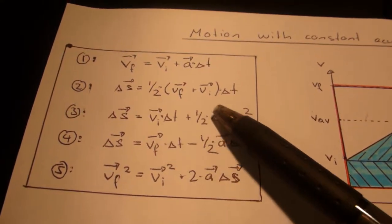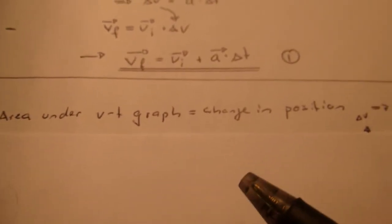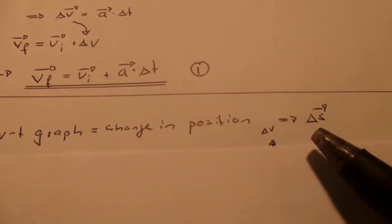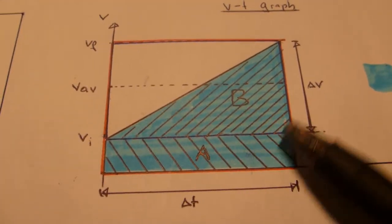For the second equation, we start with the area under the v-t graph is the change in position, delta s. The area is all the thing here in blue.